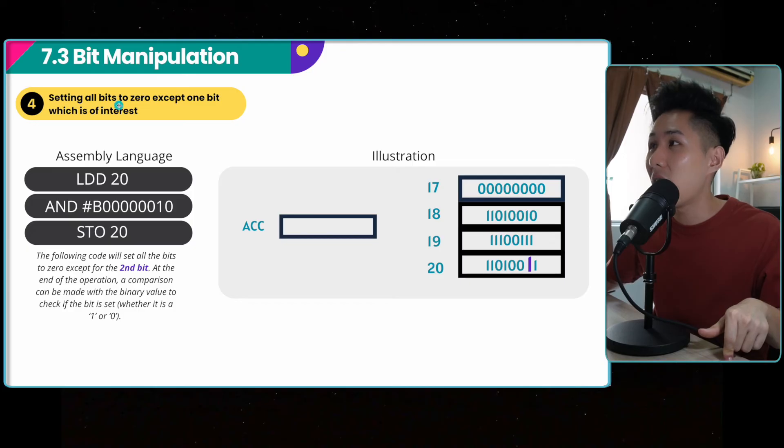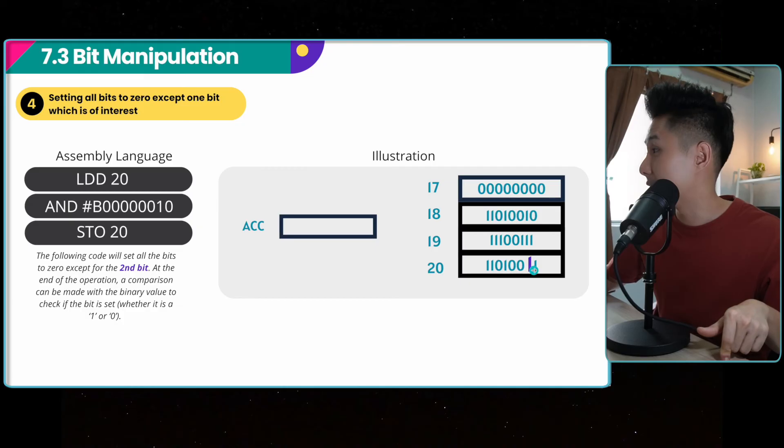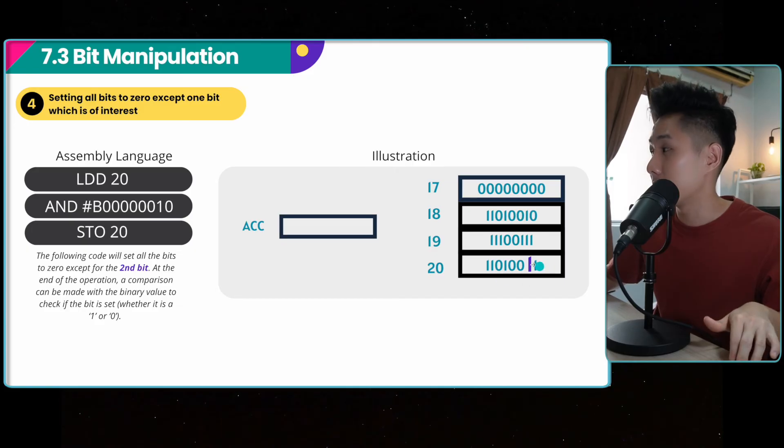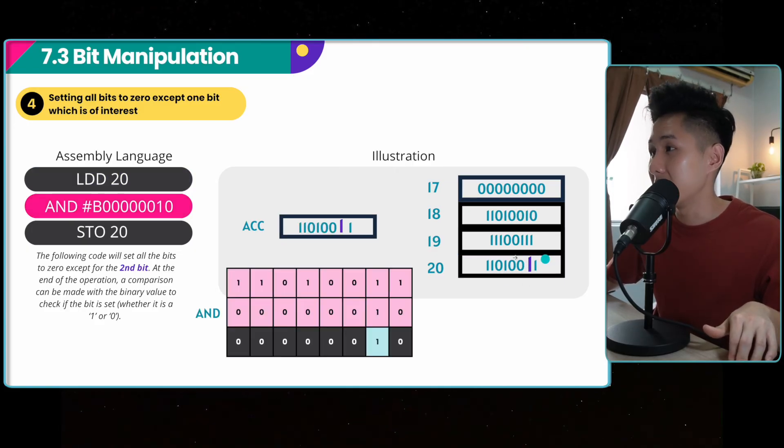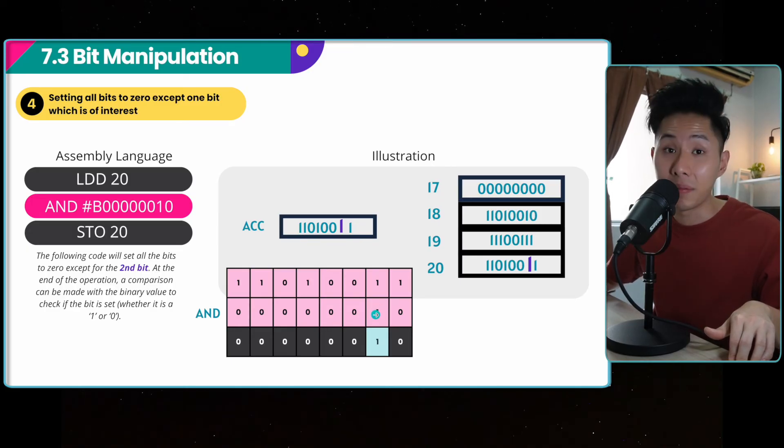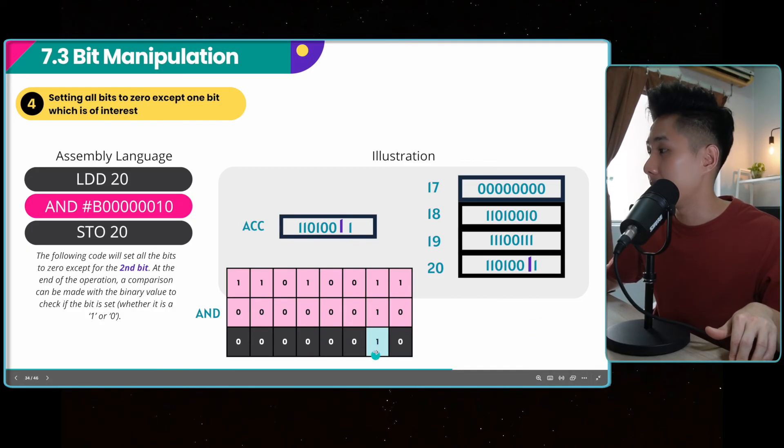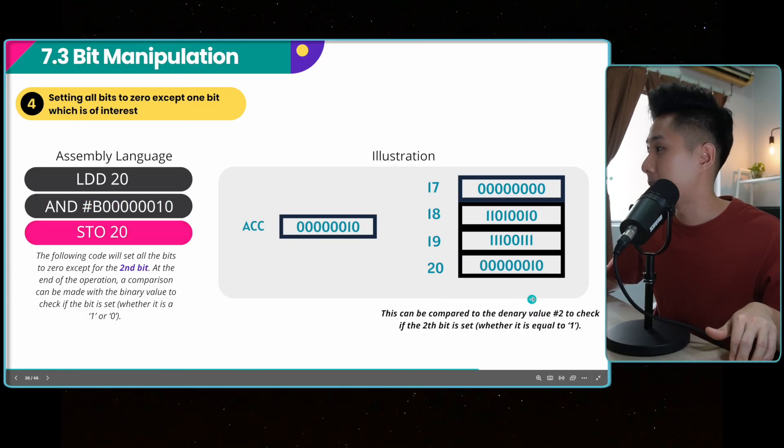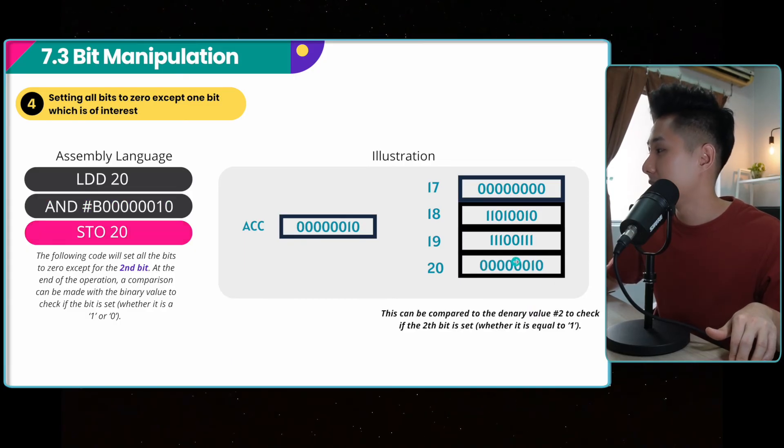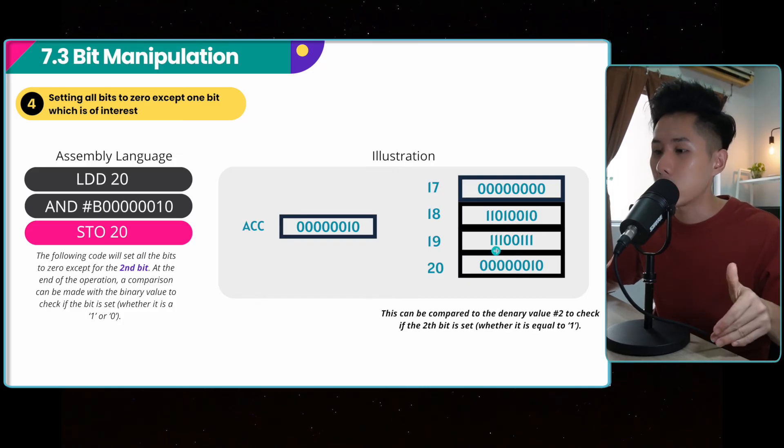I believe we still have one more. Setting all bits to zero except one bit which is of interest. So let's say I want to set the second bit of binary in location 20 to one, and actually I should set all bits to zero except this bit. I will then use an AND operator, but the trick is that I'll put the second bit here as one. And then you can see that all the bits will have been changed to zero except the bit that I put one at. Now I store the value back to my accumulator. So that's the four scenarios which we need to change a bit.